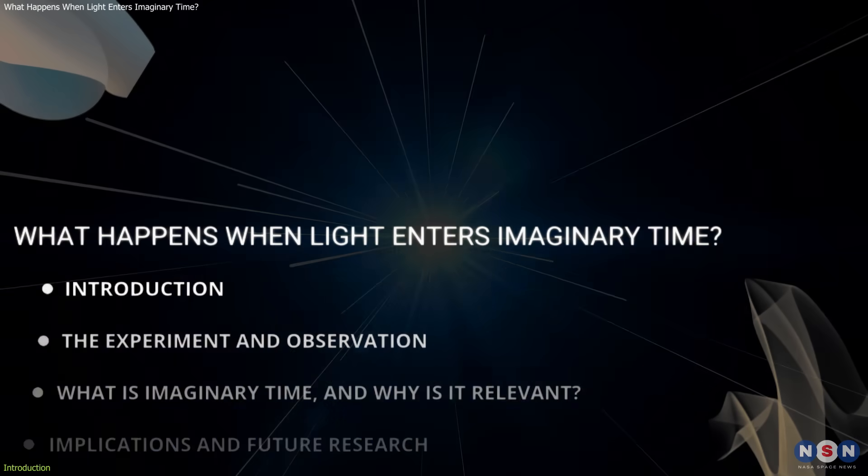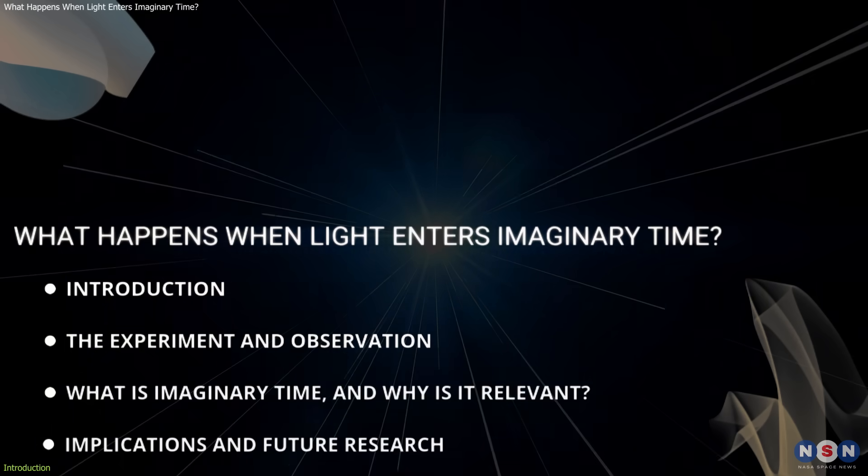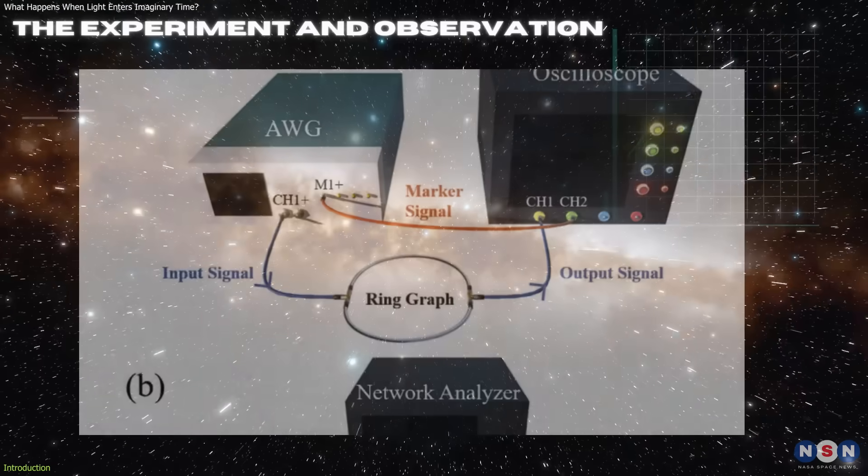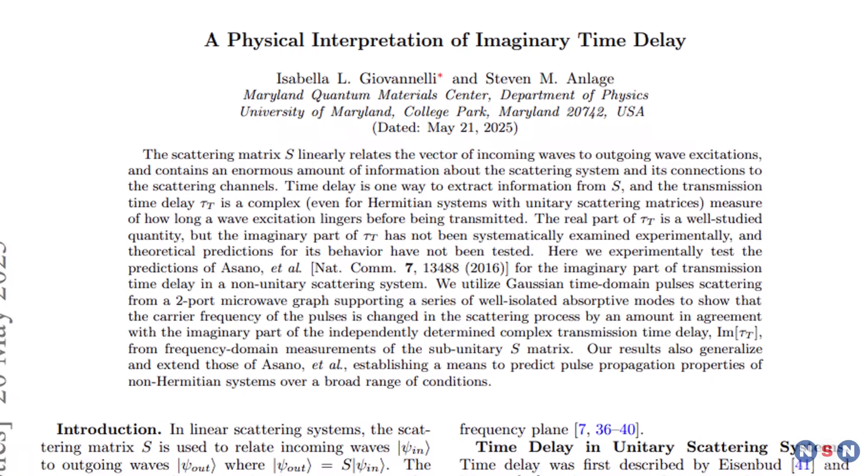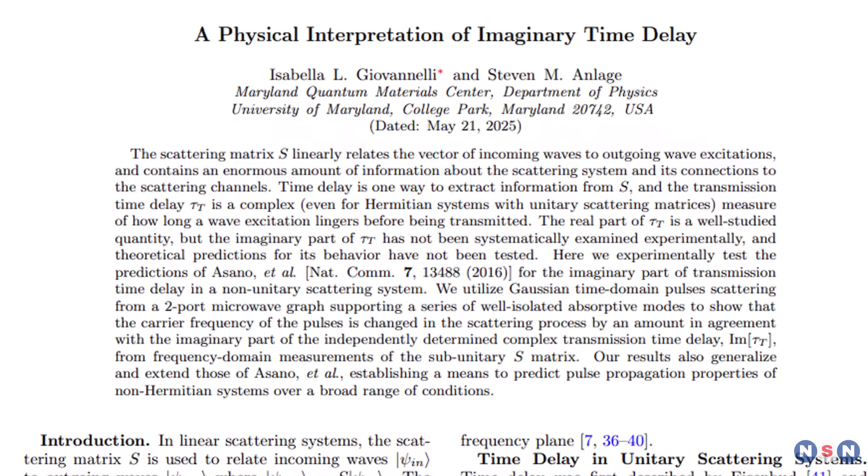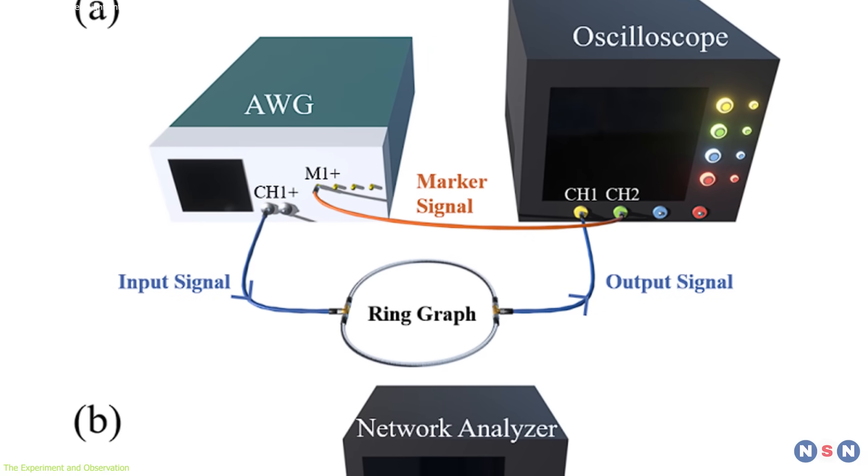It's a subtle but powerful step toward turning abstract theory into physical reality. The core of this discovery lies in a relatively simple but carefully controlled system, a ring-shaped circuit made of two coaxial cables.